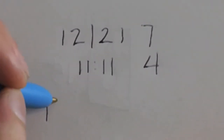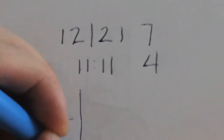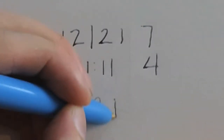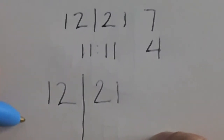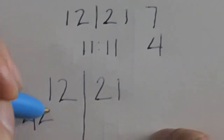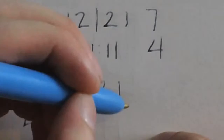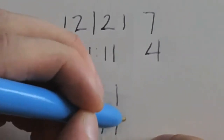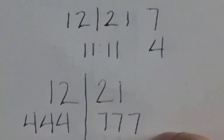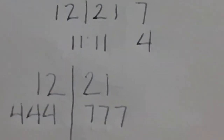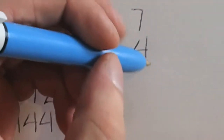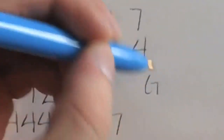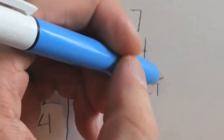12 and 21 are both divisible by 3. 12 is 4, 4, 4. 21 is 7, 7, 7. I like that. And I'll go ahead and interject that the 7th letter of the alphabet is G and the 4th is D.